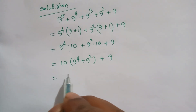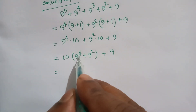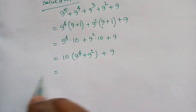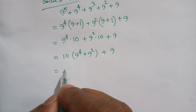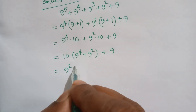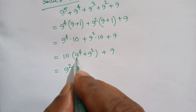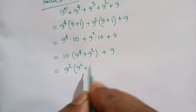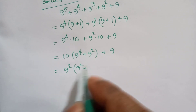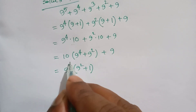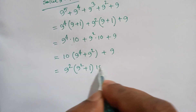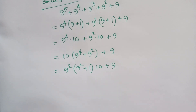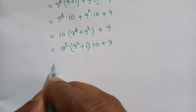Now for 9 to the power 4 plus 9 squared, 9 squared is common, so we take out 9 squared: 9 squared times (9 to the power 4 divided by 9 squared, which is 9 squared, plus 9 squared divided by 9 squared, which is 1).